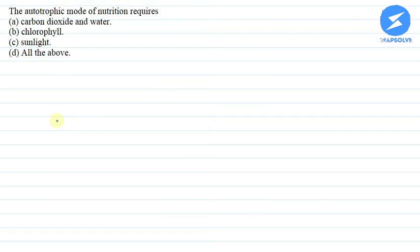Hello everyone, I am your teacher for this question. Let me explain this question to you. The question asks: the autotrophic mode of nutrition requires (a) carbon dioxide and water, (b) chlorophyll, (c) sunlight, and (d) all the above.